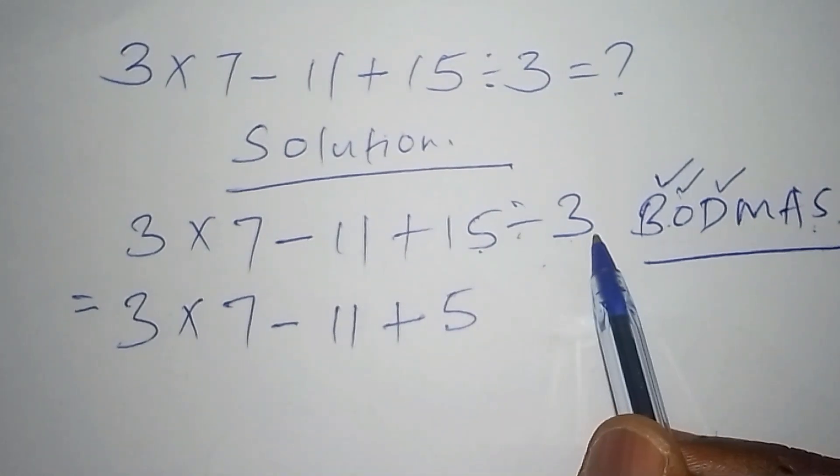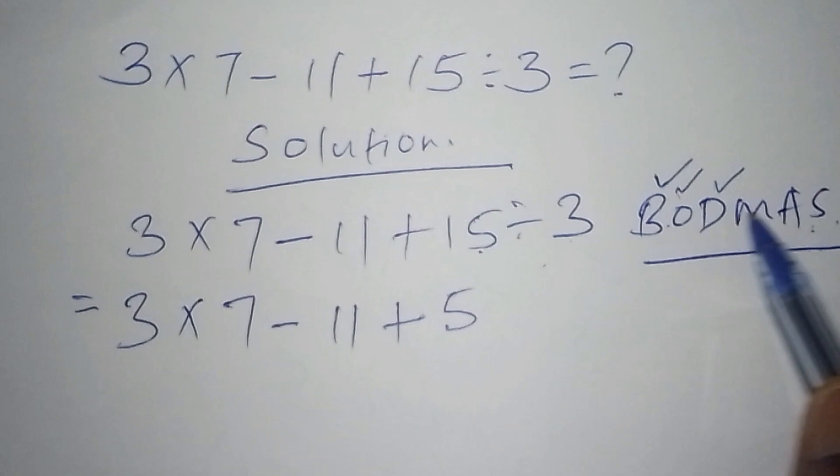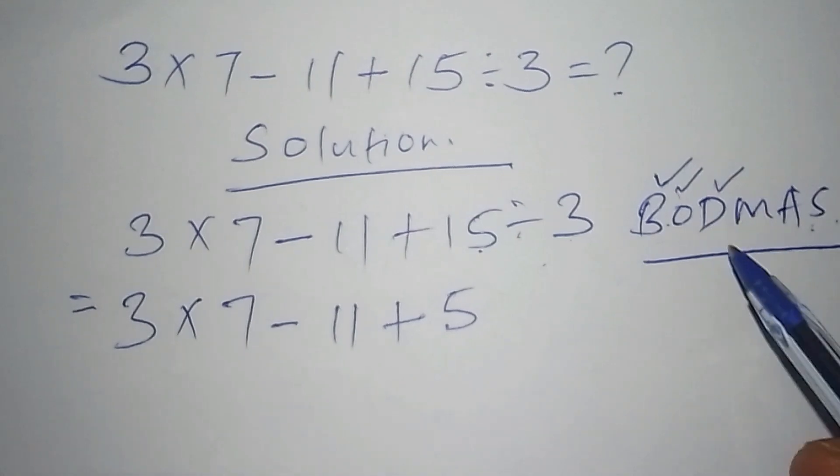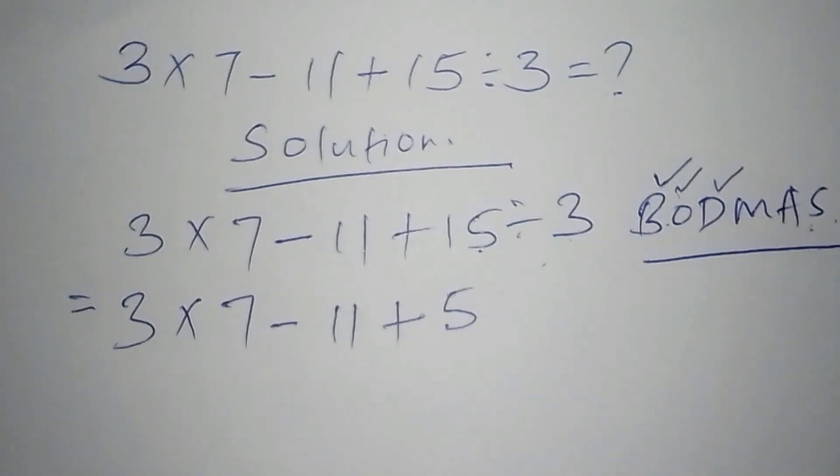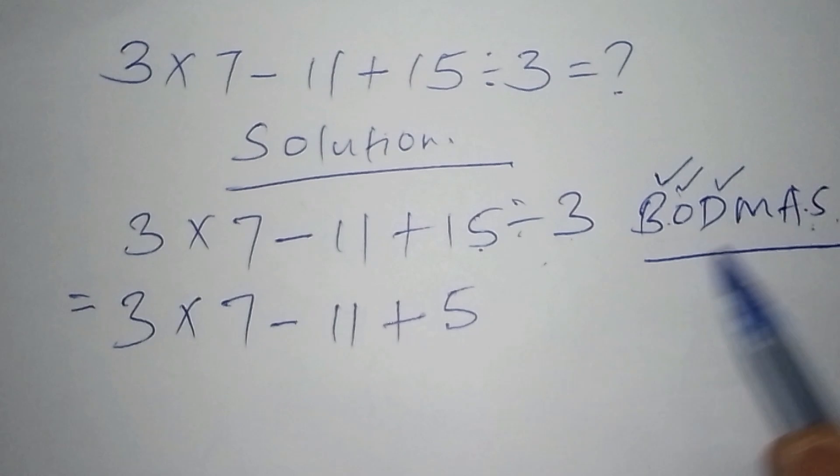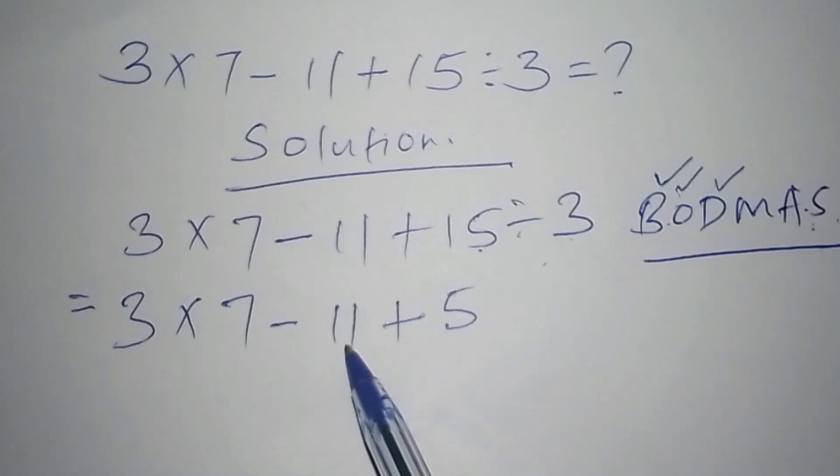Once we are done with the division sign, we are moving to our BODMAS again and check which step are we now likely to be. Because if you don't have the BODMAS sign, you can end up working out 11 plus 5, which we are not supposed to work out first.